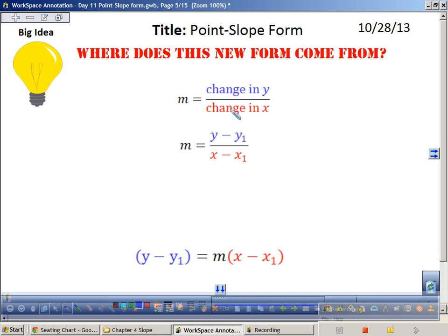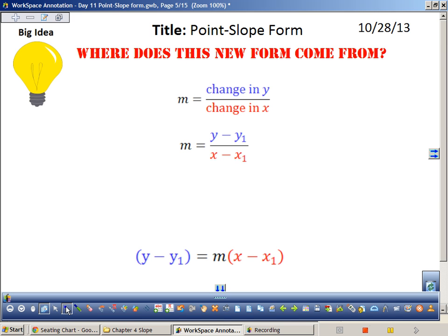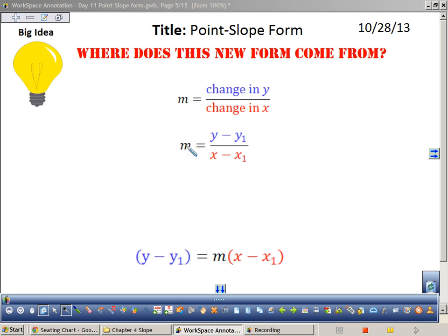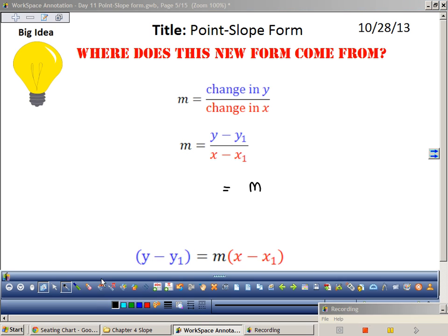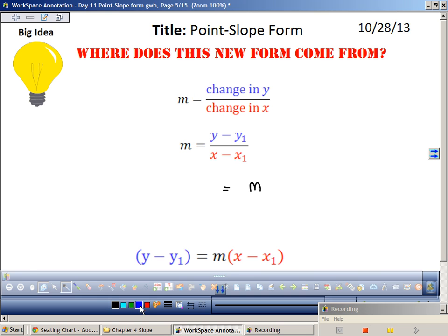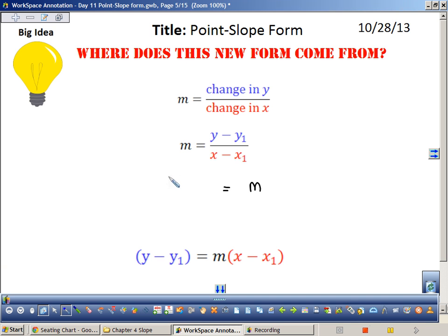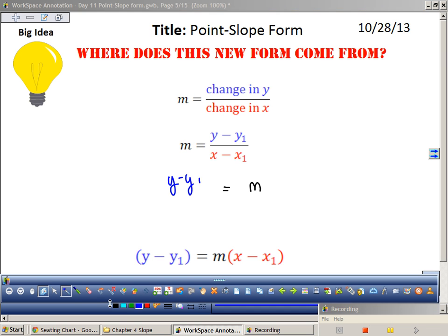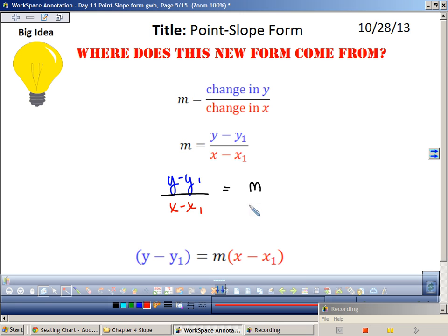Let's talk about our change in y compared to our change in x. Does everybody agree that I could put my m on this side and my slope formula on this side? It's just saying slope equals this while this equals slope.